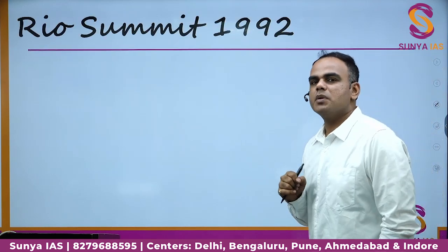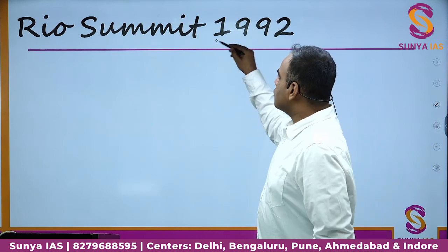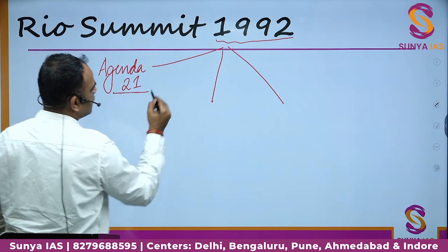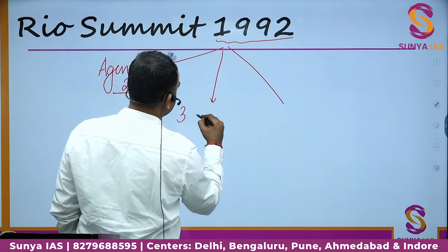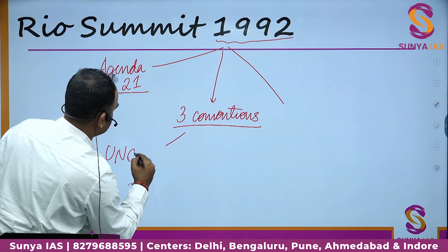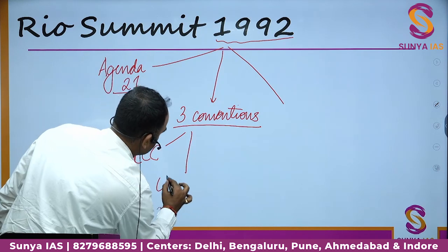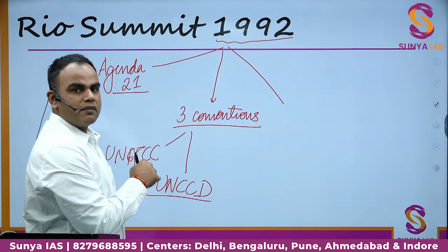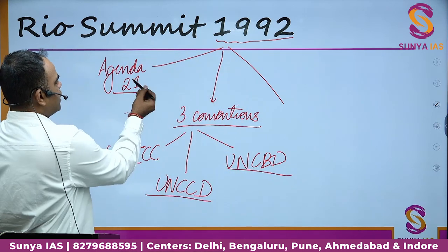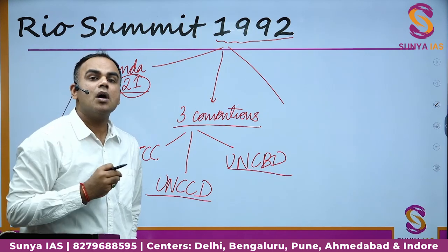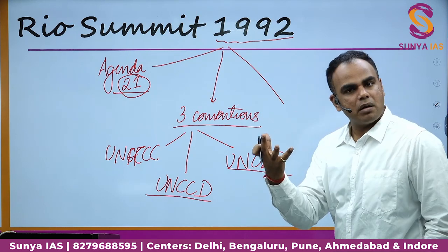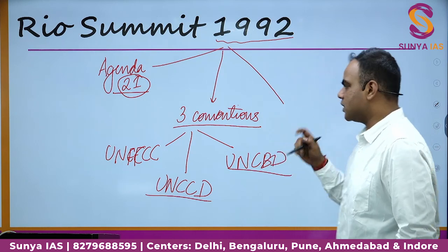Now in conventions, I am starting firstly with the Rio Summit of 1992. This summit led to three conventions: United Nations Framework Convention on Climate Change (UNFCCC), United Nations Convention to Combat Desertification (UNCCD), and the United Nations Convention on Biodiversity (UNCBD). Agenda 21 simply means these were the principles for the 21st century related to sustainable development. For this particular chapter, we are concerned with the conventions.